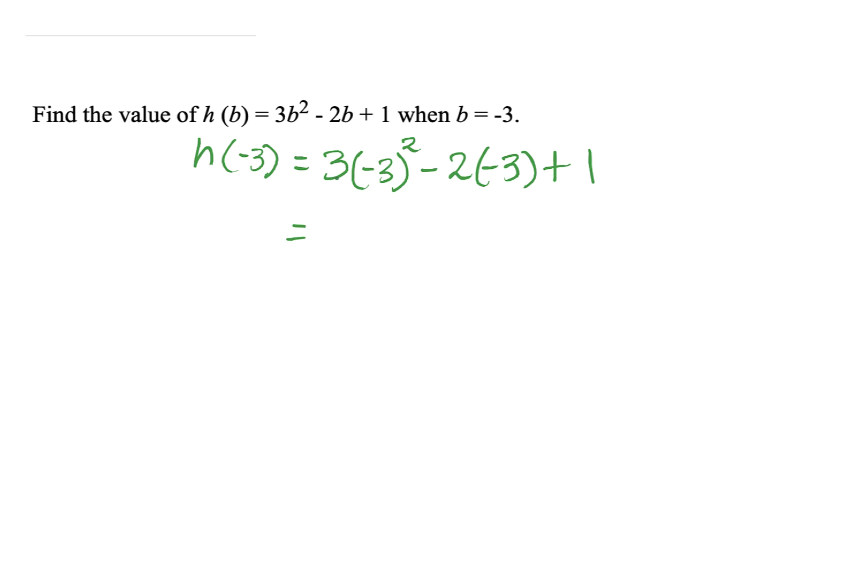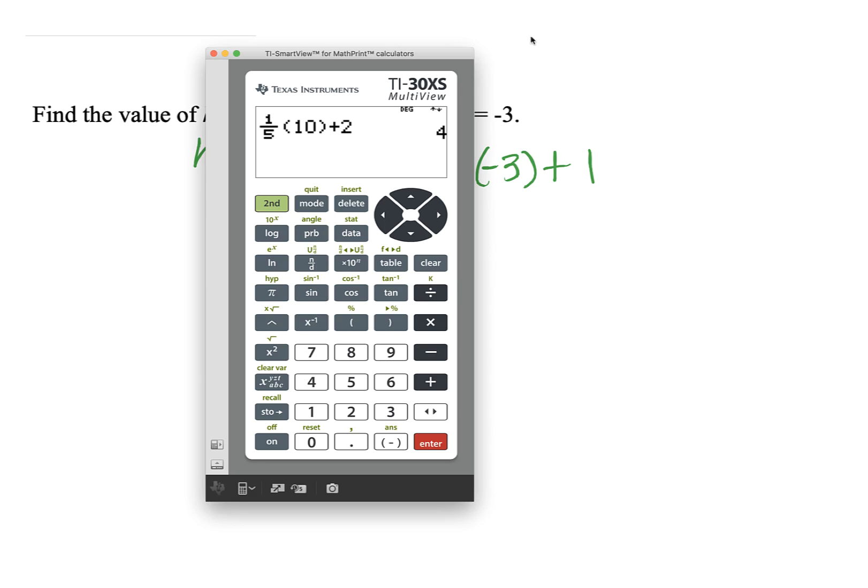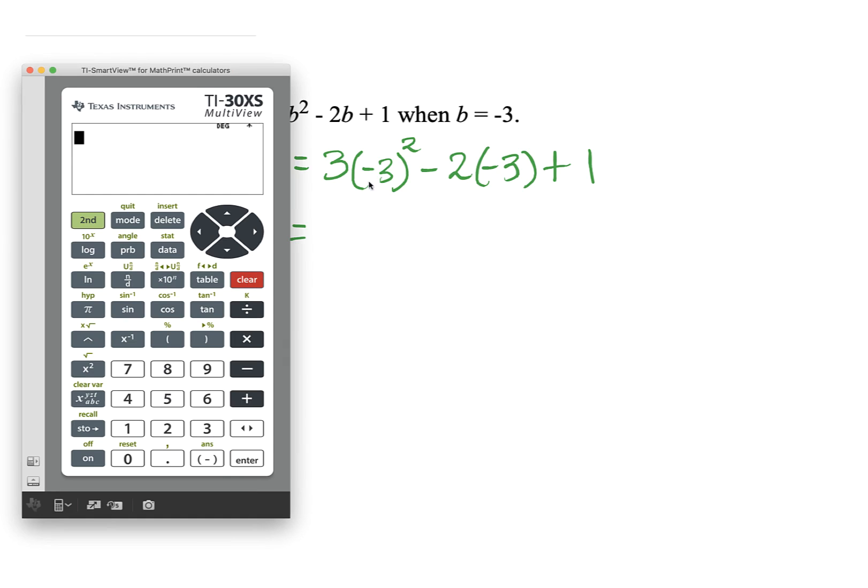Now, if you were on the calculator section, once you've done your substitution, you'll get your calculator, and we would enter 3, open parentheses, notice down here is your negative 3, close the parentheses, we need to square, subtract, 2, open the parentheses, negative 3, close, and then finally add 1. And we hit enter, and our answer is 34.